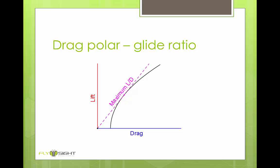As it turns out, the slope of this line is equal to the maximum glide ratio achievable with this airfoil.